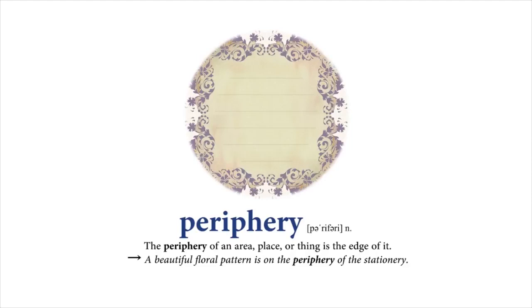Periphery: The periphery of an area, place, or thing is the edge of it. A beautiful floral pattern is on the periphery of the stationary.